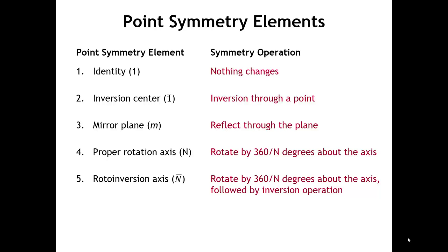These are all the symmetry elements we need for an isolated object. Sometimes these are called all-rotational symmetry elements. If we rotate by 360 degrees, that's a one proper rotation axis, the same as the identity. If we rotate by 360 degrees followed by an inversion, that's a one-bar rotoinversion, the same as an inversion center. And if we rotate by 180 degrees followed by an inversion, that's a two-bar rotoinversion, the same as a mirror plane. So we can describe the first three elements as either proper rotation axes or rotoinversion axes.